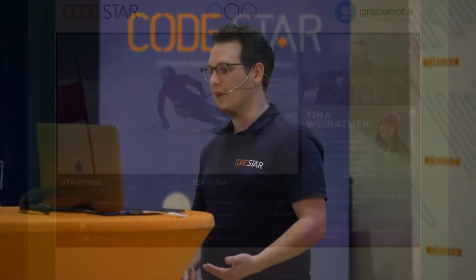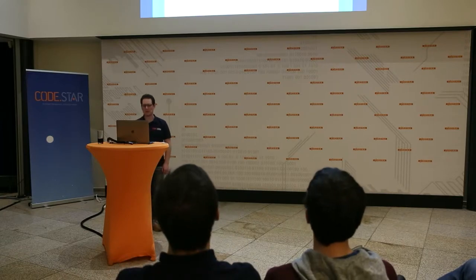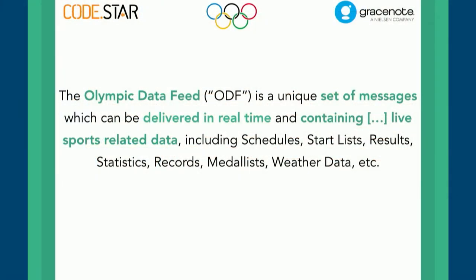So, how did we achieve building these widgets? One of the biggest boosts in that was the Olympic Data Feed. The Olympic Data Feed is a unique set of messages which can be delivered in real time, containing live sports-related data. They include schedule, start list results, et cetera — even weather updates, which completely boggled my mind. Basically, the ODF is a set of messages being sent by the Olympic committees from every Olympic venue, giving all kinds of updates on what's happening during the event.